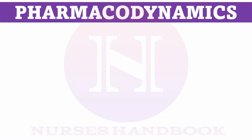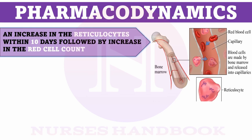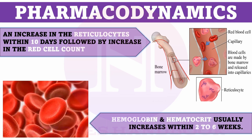Now comes the pharmacodynamics. It is seen that there is an increase in reticulocytes within 10 days of administration of injection erythropoietin, followed by an increase in the RBC count. Secondly, it is also seen that hemoglobin and hematocrit also increase within 2–6 weeks after administration.